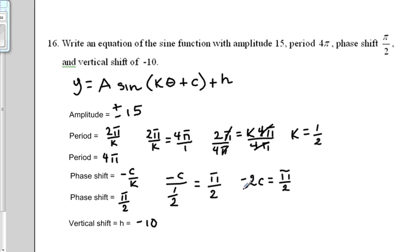Now, to get c by itself, we divide both sides by negative 2. If you divide 1 half π by negative 2, the 2's are not going to cancel each other out. What you're going to be left with is negative π over 4. So that is the value for c.